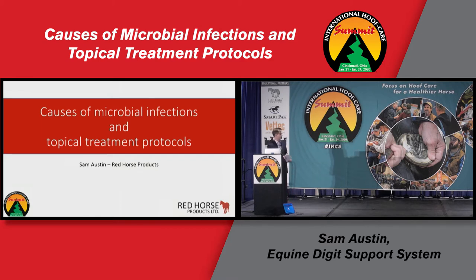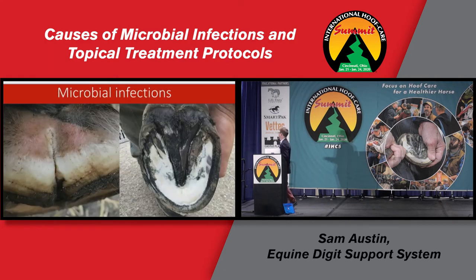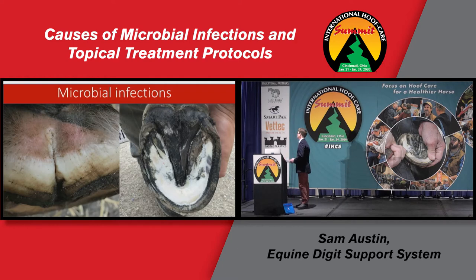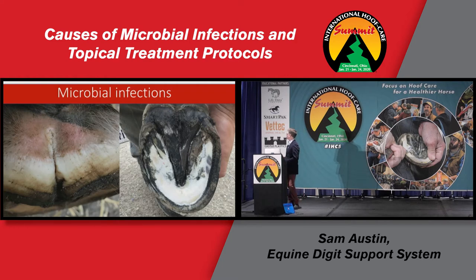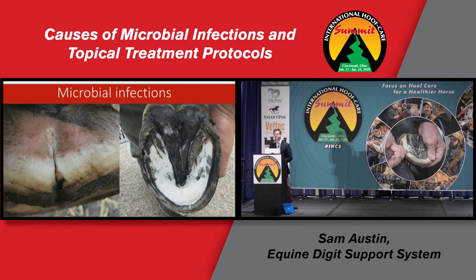When we're talking about microbial infections, we're talking about the deep central sulcus, which is often a thrush infection, surface thrush on the foot, white line disease, seedy toe, and in the extreme, canker.